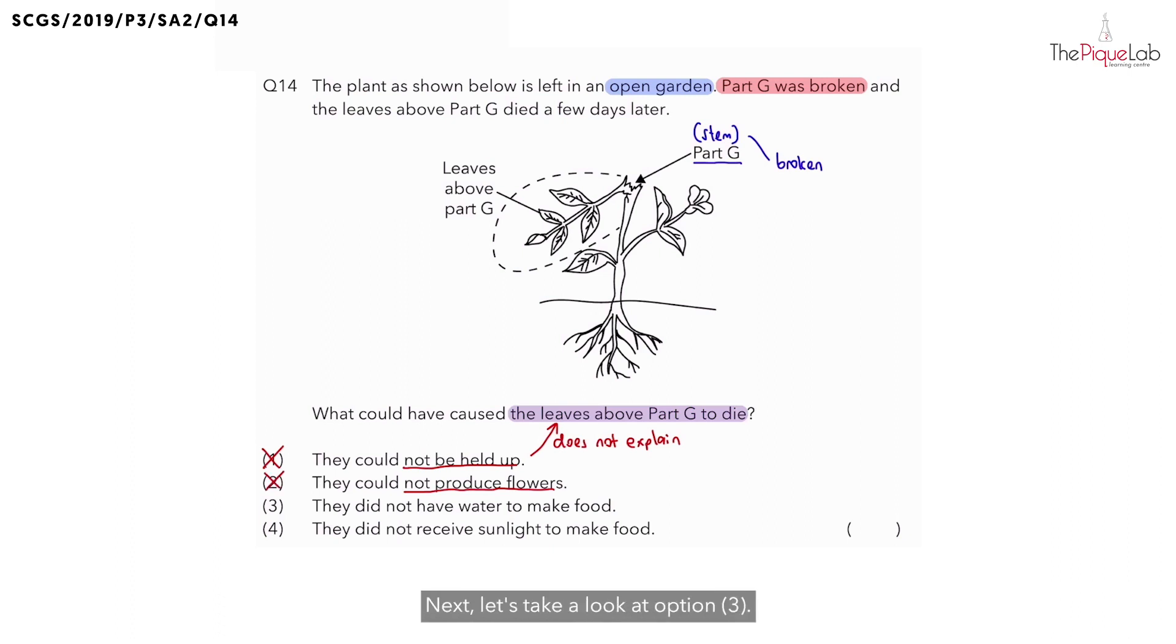Next, let's take a look at option three. They said that the leaves above part G did not have water to make food. Is option three true? To answer this, let's first figure out where does the plant get its water from. I'm sure you can tell me water is absorbed by the roots of the plant.